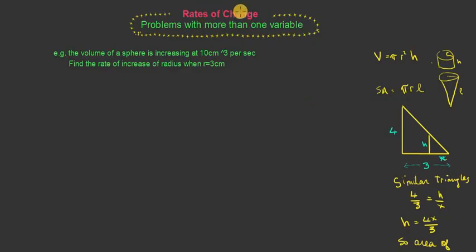Some rates of change problems deal with more than one variable. For example, in a cylinder, you're going to find that the volume is equal to pi r squared h.